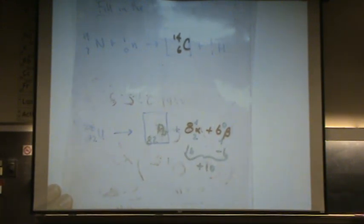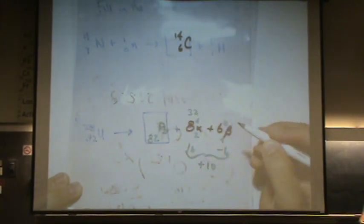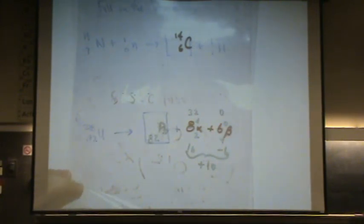Okay, let's do the number on the top now. The mass number. That's 238 on the left. On the right we've got 8 times 4, that's 32. 6 times 0, that's 0. So a total of 32 there. 238 minus 32 is 206. This is lead-206.